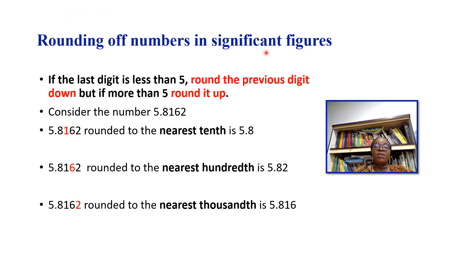Rounding off numbers and significant figures: if the last digit is less than 5, round the previous digit down. However, if it is 5 or more, round the previous digit up. So if the digit following the one being rounded is 5, 6, 7, 8, or 9, round up; if it is 0, 1, 2, 3, or 4, round down.